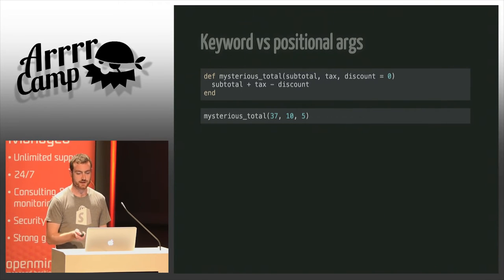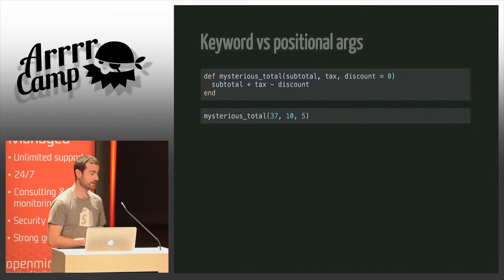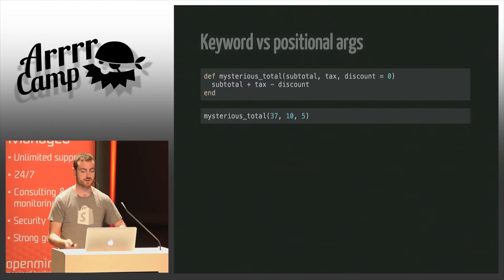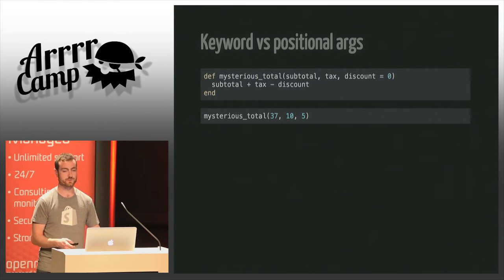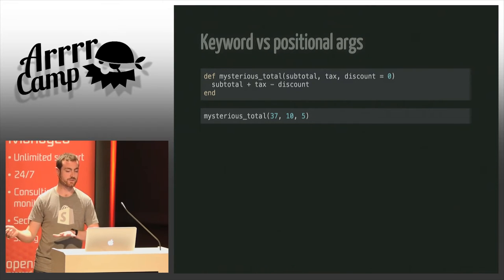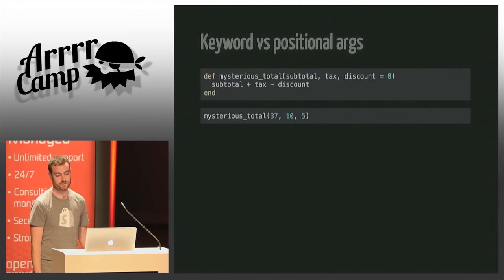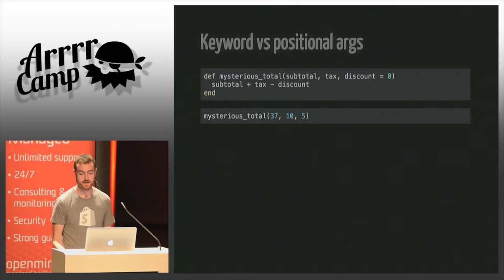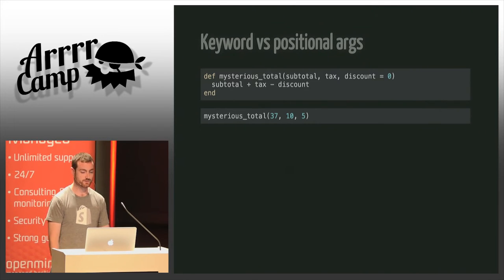When you look at the method call itself, there's no way you can guess which argument corresponds to which parameter. So if the call sites are in a different file than the method definition — which happens a lot — you can be confused.